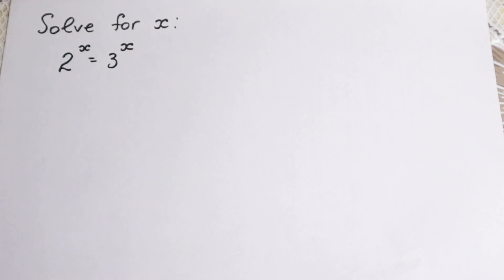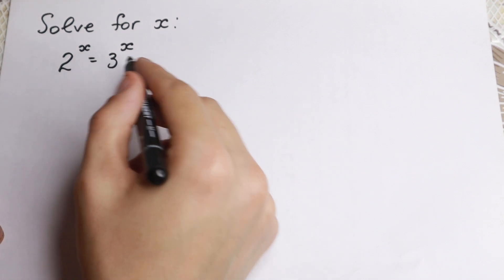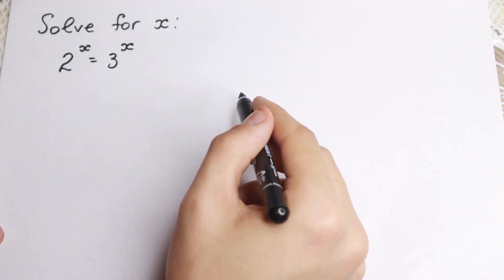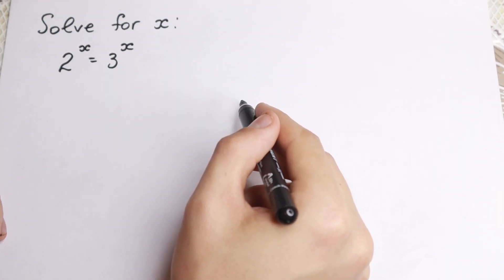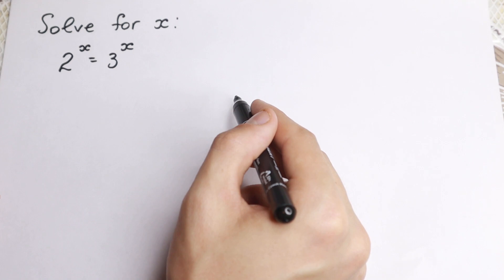Hello my friend, happy to see you here. Really interesting problem today. We have 2 to the x equal to 3 to the x. On the first sight there is no roots right here because this is kind of weird problem, but right here we'll have a root and I'm going to show you this one.